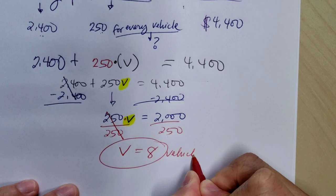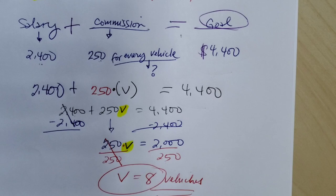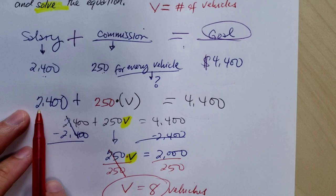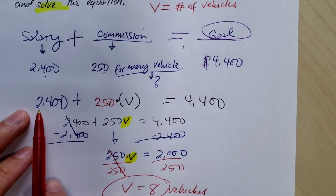To reach the goal of getting $4,400, if you check that you can plug this back in to v. So 2,400 + 250 times 8, if you add those two up that should give you 4,400. Hope this helps.